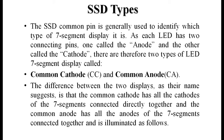There are two types of seven segment displays, identified by the common pin. Since each LED has an anode and a cathode, there are two types: common cathode (CC) and common anode (CA). The common cathode has all cathodes of the seven segments connected together, while the common anode has all anodes connected together.